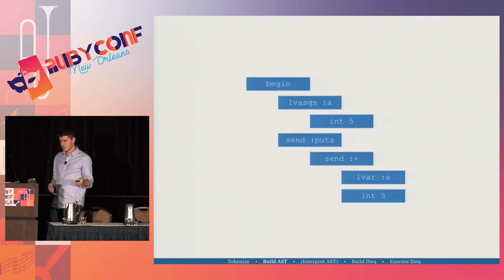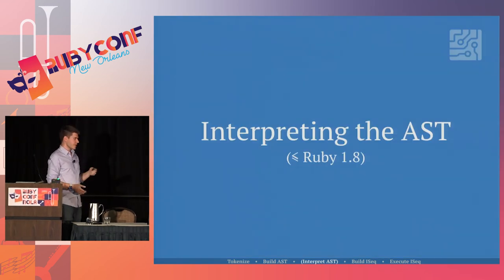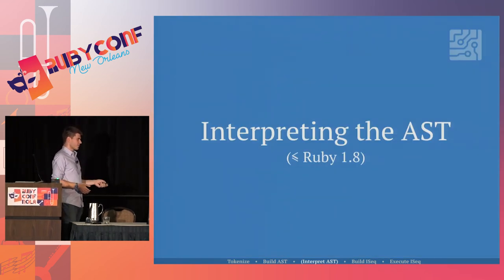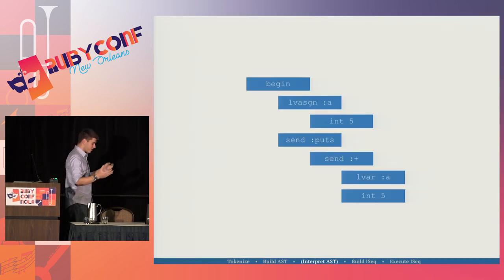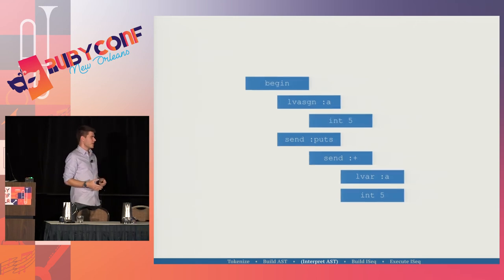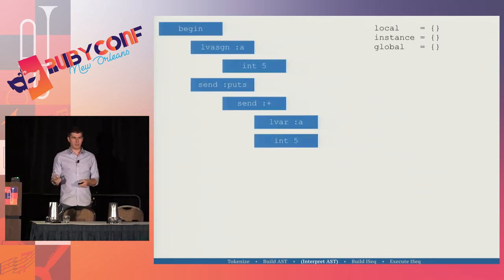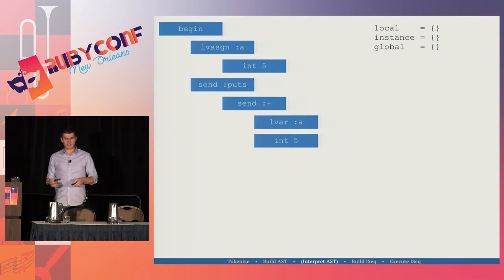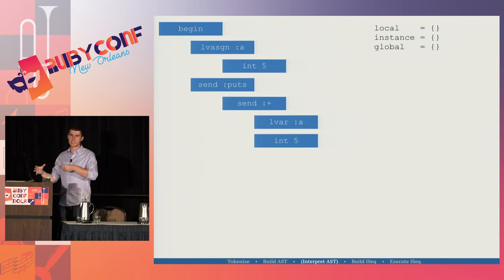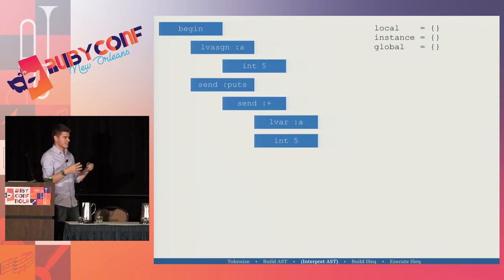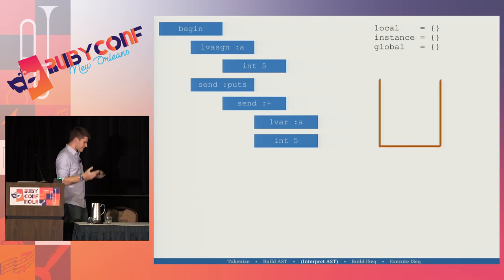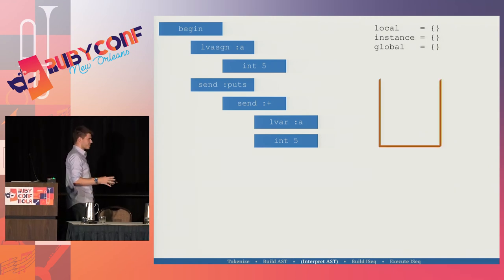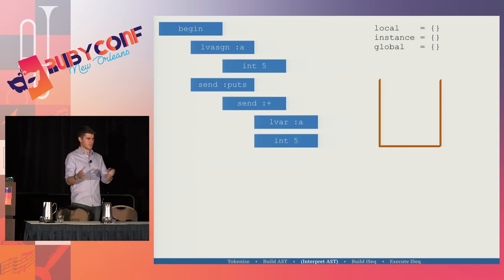So in Ruby 1.8 and before, the abstract syntax tree was immediately interpreted. When you have your nodes and you're going to interpret it, you need two things: a state — a global state that runs around with your program as it's being interpreted — and a stack. This is a stack-based virtual machine. There are other kinds of virtual machines; this one is not.